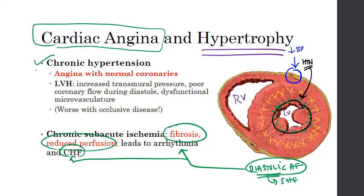If we were to do a nuclear stress test to see how perfusion looks inside the myocardial wall, we might see evidence of decreased perfusion on one or several portions of the wall — related to that microcirculation disorder. If we then follow up with a coronary angiogram, we might find that the coronaries are actually normal. This disorder involves massive or progressive hypertrophy of the left ventricle, increased transmural pressure, poor coronary flow during diastole, and dysfunctional microvasculature leading to poor oxygenation — all of which is worse with occlusive disease.